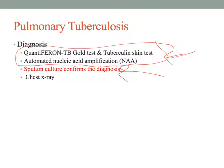When obtaining a sputum culture, collect it in a sterile container, ensuring the patient produces a deep productive cough from the lungs—not simply spitting into a cup—since we need a specimen that comes from the lungs. A chest x-ray can show encapsulated TB and confirm any infectious processes in the lung fields.